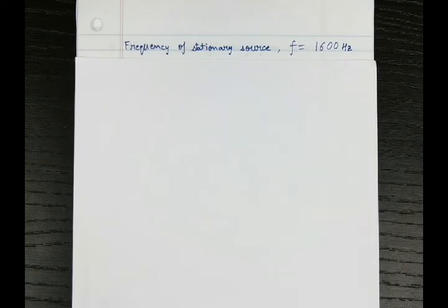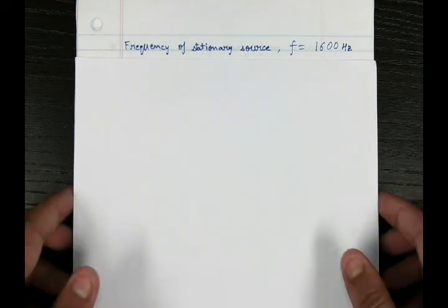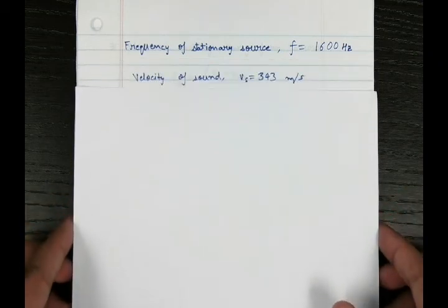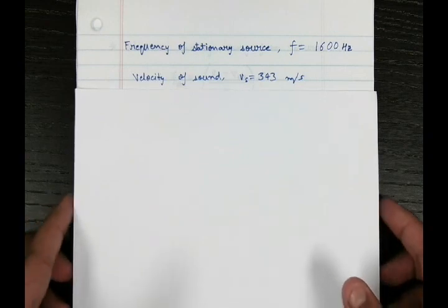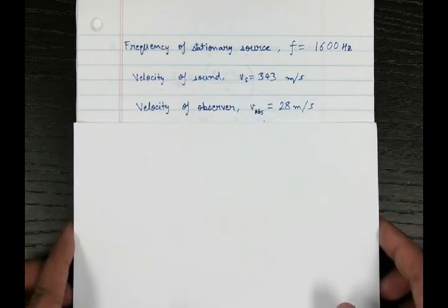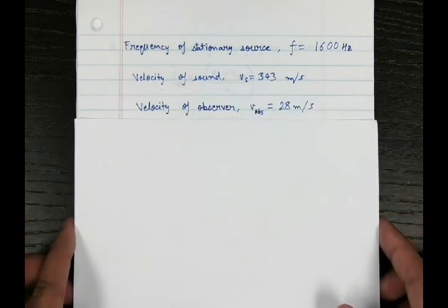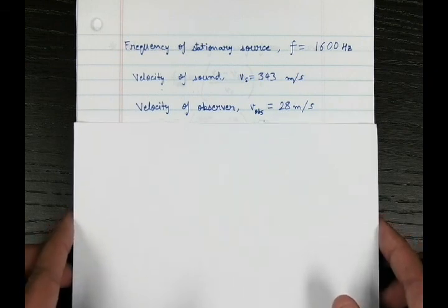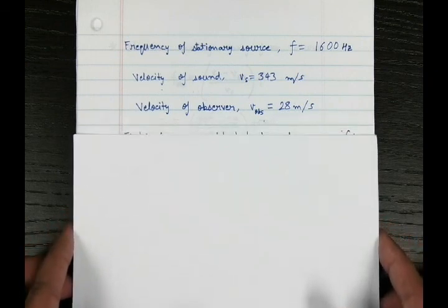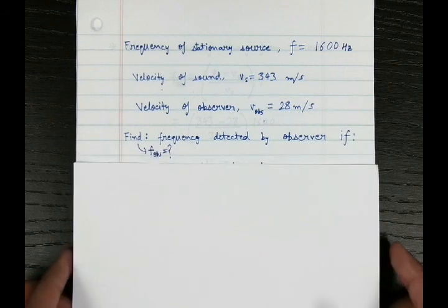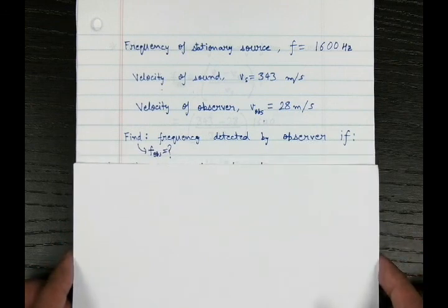Let's understand the Doppler effect better by taking an example. Let's say we have a source whose stationary frequency is 1600 hertz. The velocity of sound in air is 343 meters per second, and there is an observer moving at 28 meters per second. We have to find what frequency the observer detects — f-observer — in two different cases.